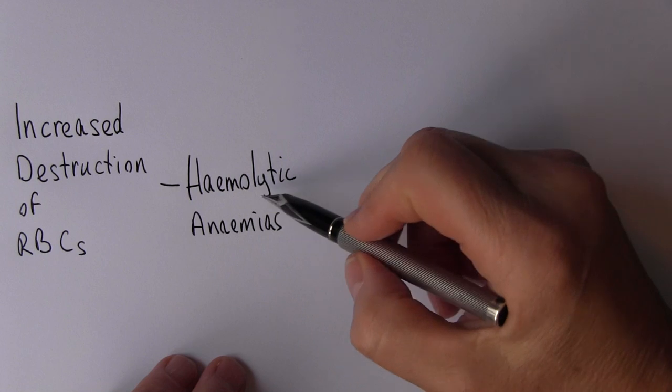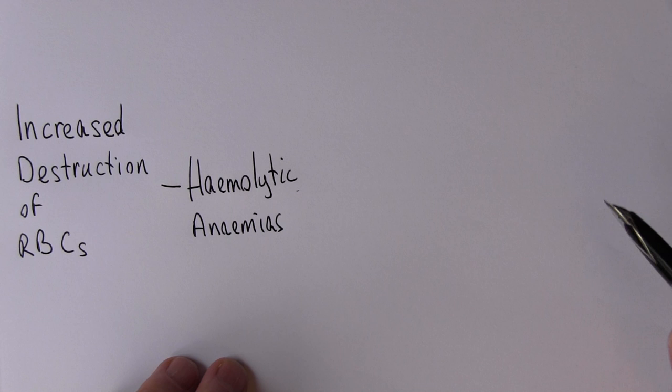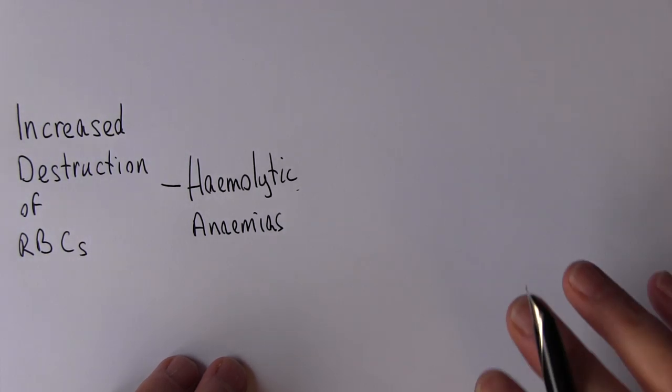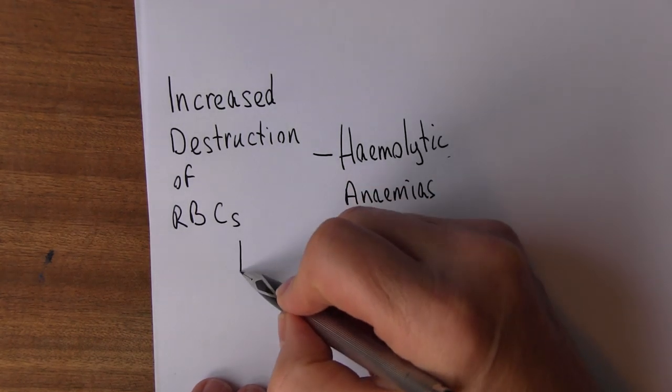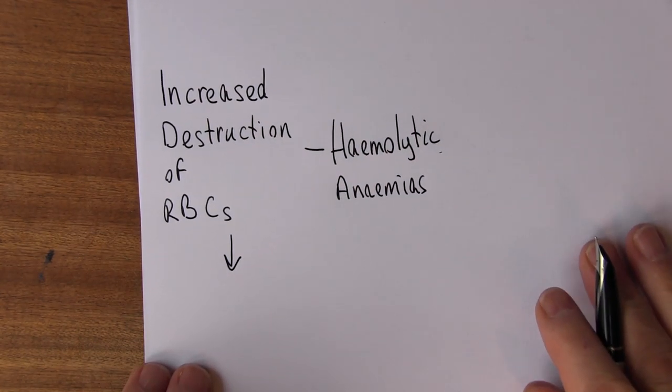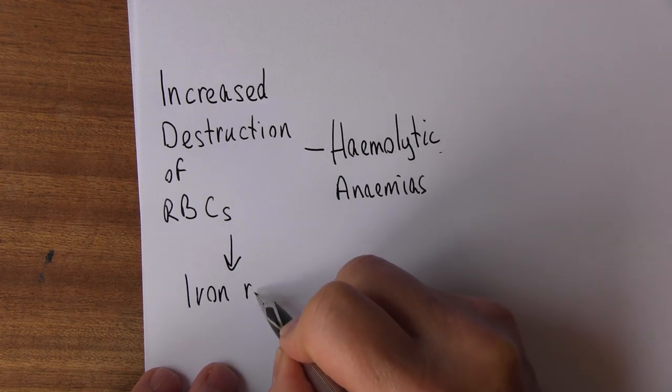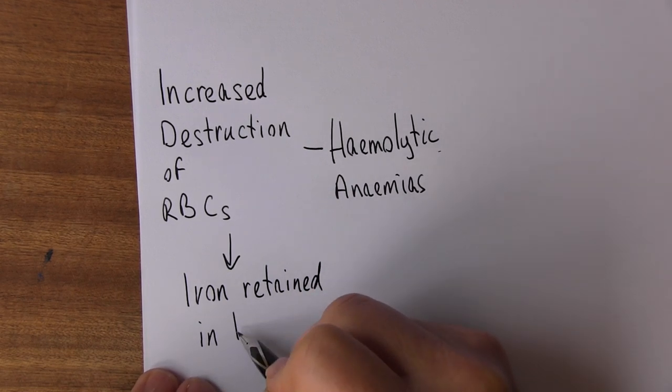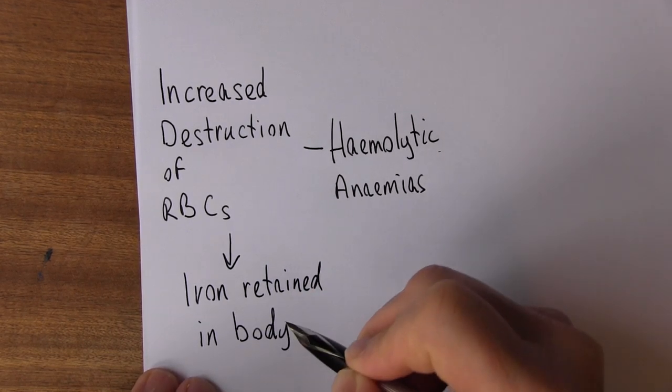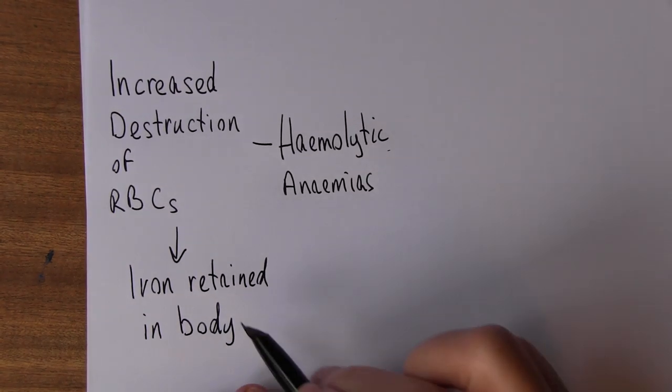Hemo is blood, lytic or lysis means to break up. The red cells are being broken up, and because the red cells are broken up within the body, the iron that was in the red cells is retained. Because the iron is retained in the body, usually these patients don't develop iron deficiency because the iron is retained.